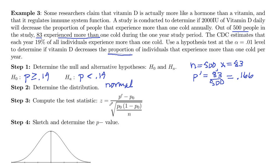Compute our test statistic. Here's the equation. Our p prime is 0.166 minus p_0, which is what you're testing against in the null hypothesis, 0.19. And then we're dividing by square root of 0.19 times 1 minus 0.19 over 500.